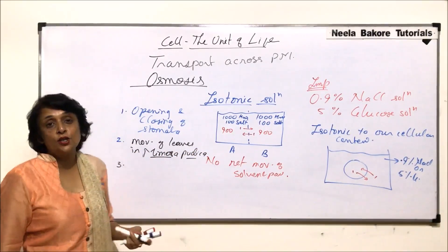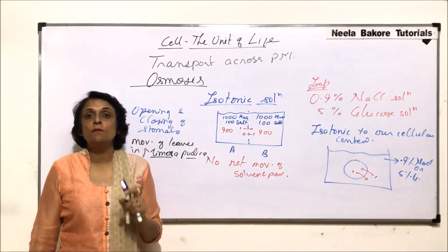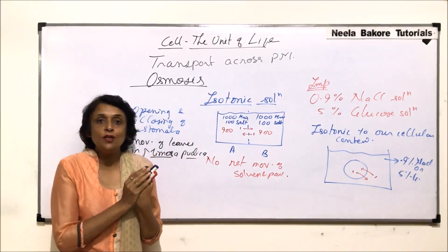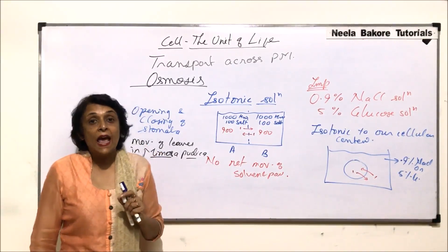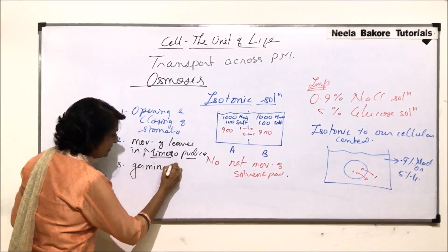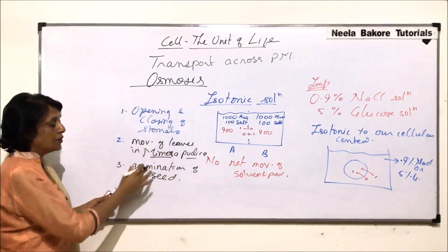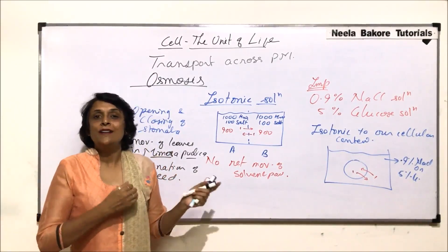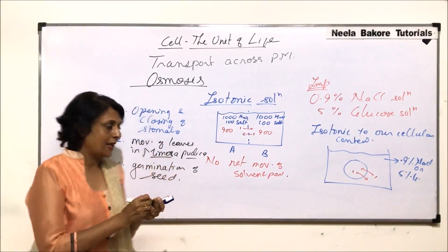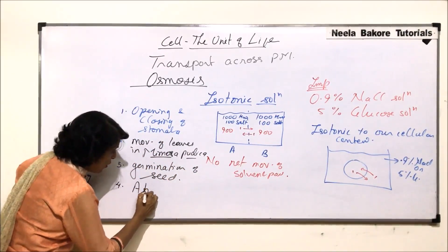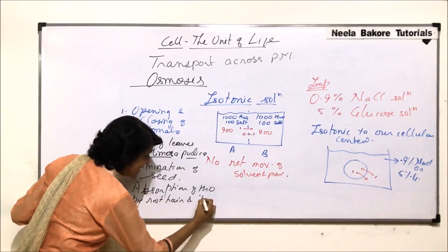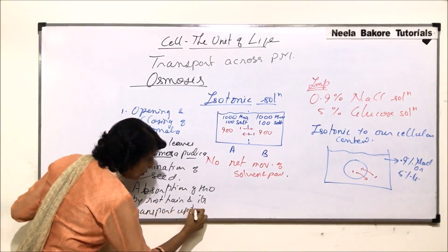Another application of osmosis is seed germination. The first step is imbibition, where water is absorbed on the surface of the seed. This causes the seed coat to crack, and water then enters — without this, the seed cannot germinate. Osmosis is also essential for water absorption by root hair cells, which transport water from one cortex cell to the next, all the way up to the xylem.